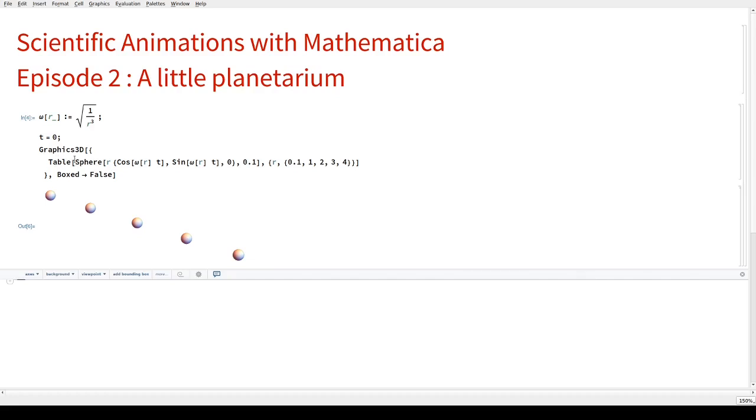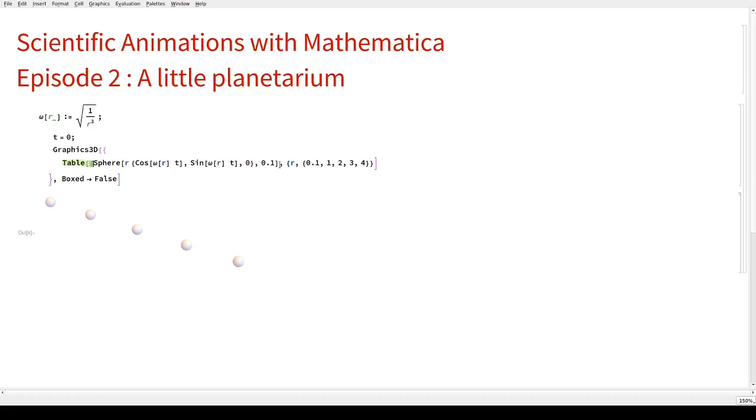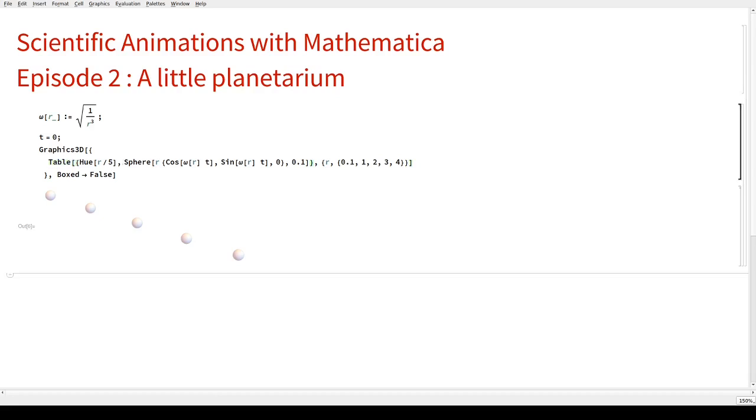So let's change the color. Instead of having a table where we define a sphere, define another sphere, let's prefix everything. Before the definition of every sphere, we define what color is going to be. Now hue is a function that essentially covers all colors when the argument goes between zero and one. In our case, the radius is somewhere between zero and four, so if we divide everything by five, we get different colors.